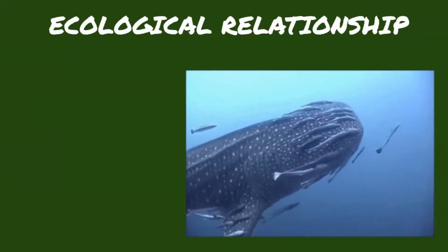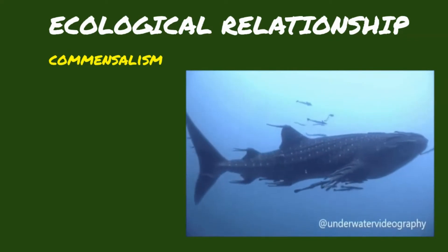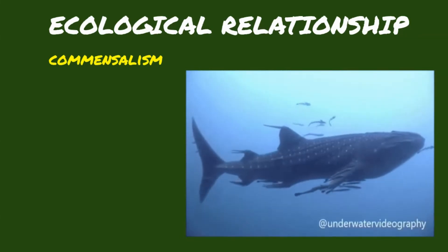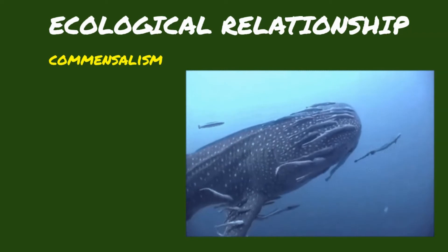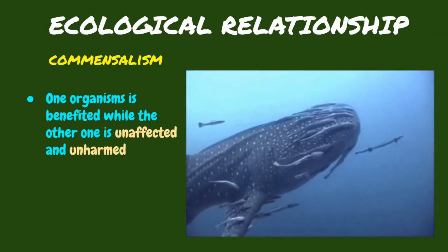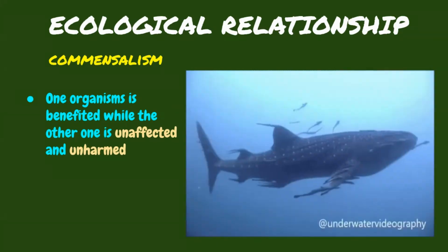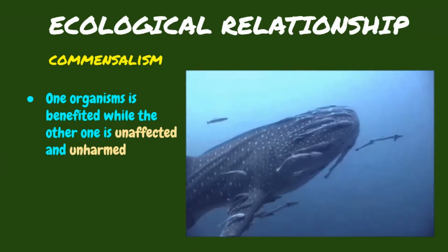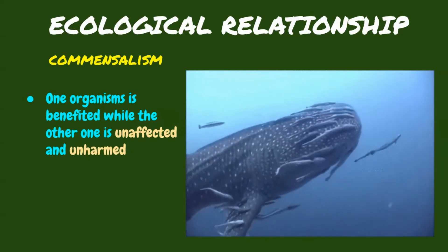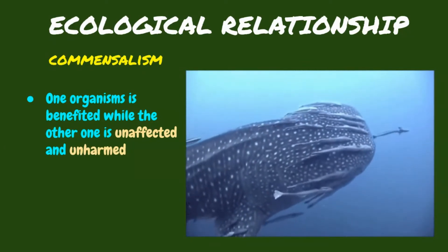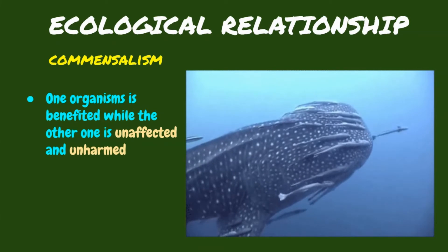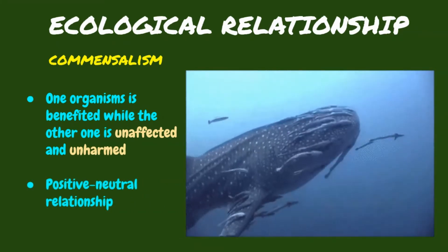A remora fish would attach itself to a shark and use the shark for transportation. The remora fish eats all the food that is left over from the shark. The symbiotic relationship between them is called commensalism, where one organism is benefited while the other one is not affected nor harmed. The remora fish is getting its food, but the shark gets no benefit. This relationship usually exists between a larger organism and the smaller one. The organism which gets the benefit is called the commensal. The commensal uses the other organism or the host for transport, shelter, or protection. This is a positive-neutral relationship.